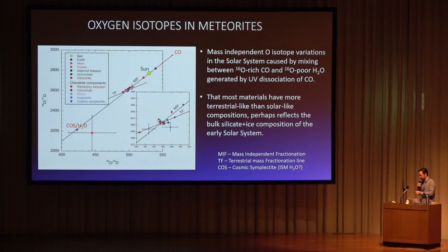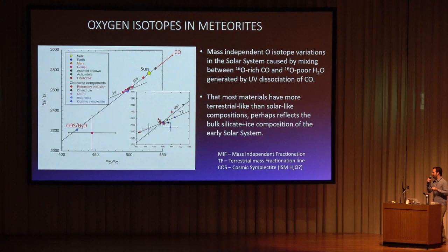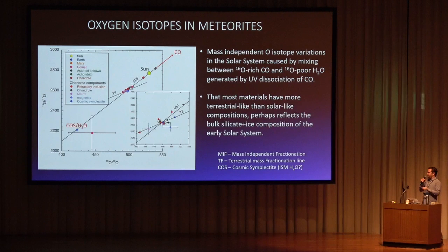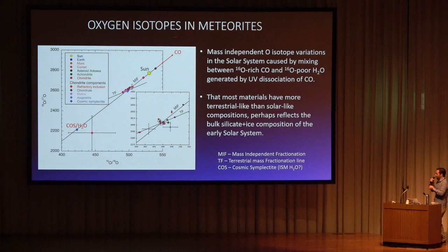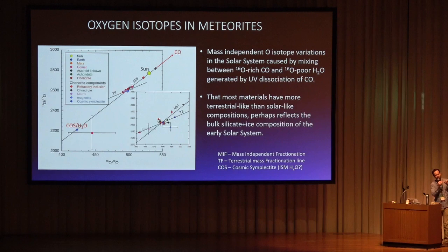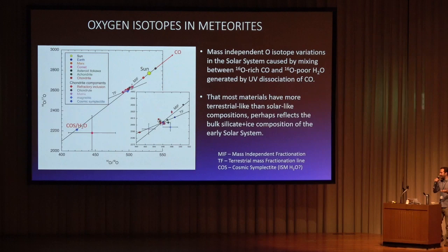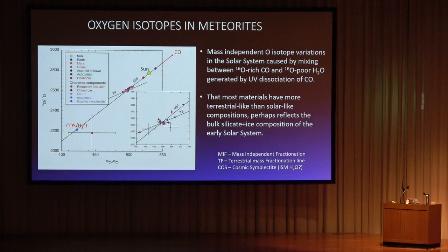The oxygen-18 and -17 isotopes tell us the story of water and silicates in the solar system. Values cluster around the terrestrial value but all lie along a mass-independent fractionation mixing line, where the degree of fractionation of 17O and 18O is similar and doesn't depend strongly on mass. This mass-independent fractionation implies mixing of material enriched in both 17O and 18O, explainable as a result of isotope-selective photodissociation of CO producing these enrichments. If 18O-enriched water then mixes down into the protoplanetary disk midplane, it can undergo isotopic exchange with silicates to produce the observed enrichment.